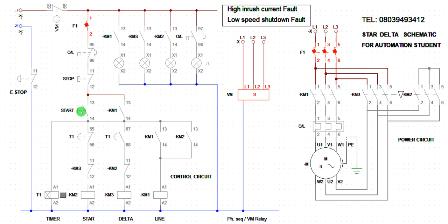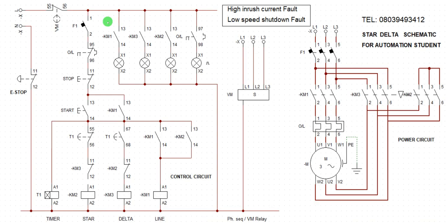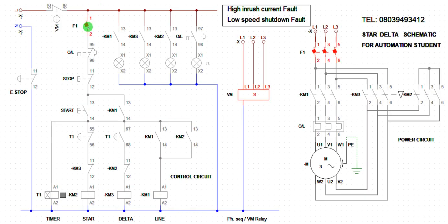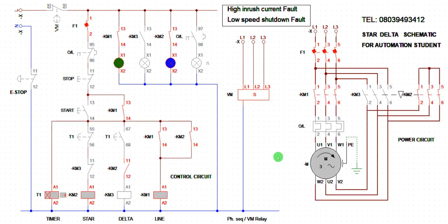Now let's close the circuit and try again. I close it and put it on — you can see the system now gets energized. This confirms that the star contactor must be the priority behind the design.